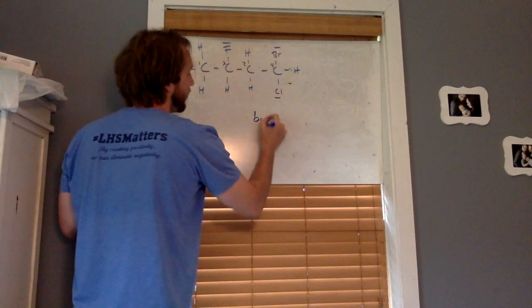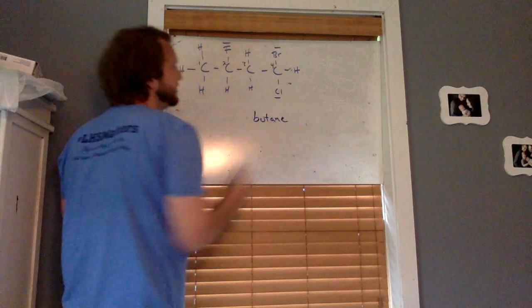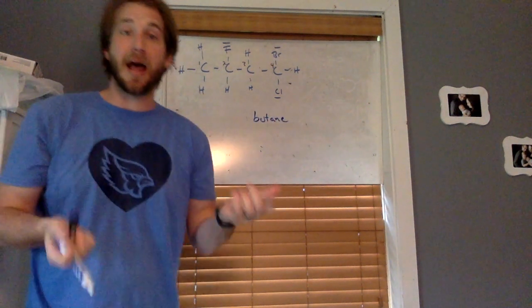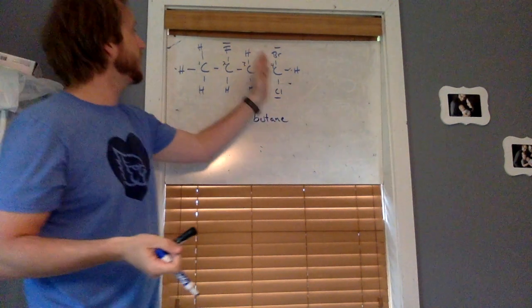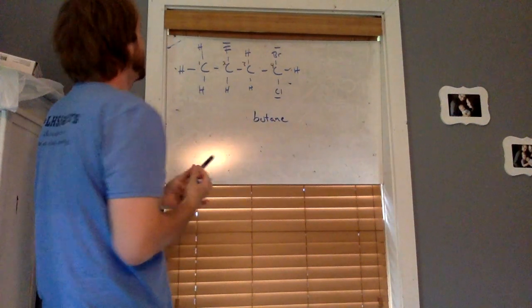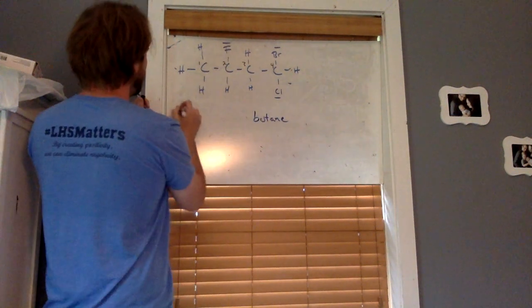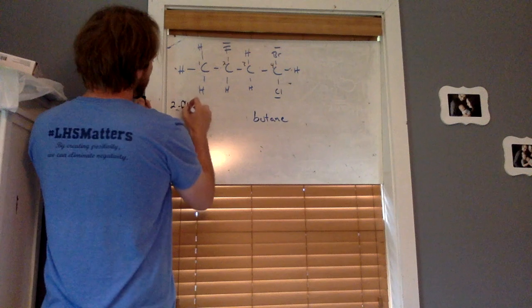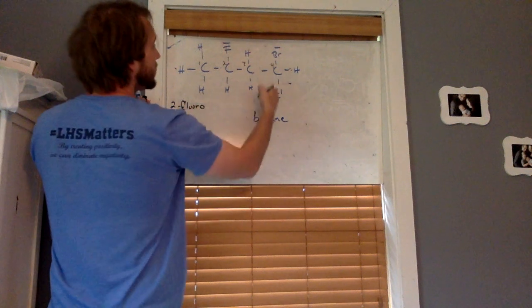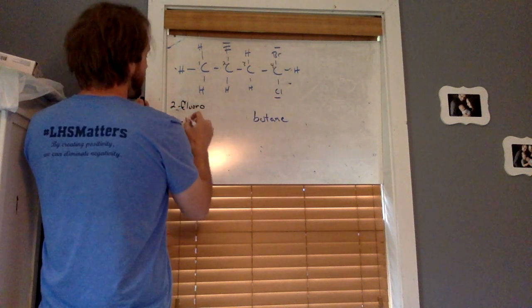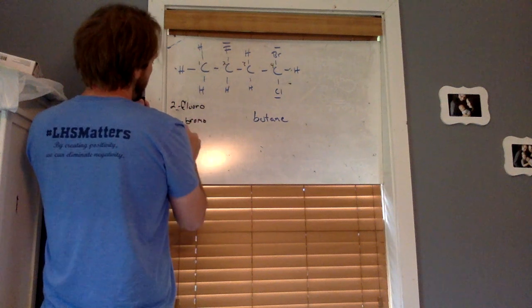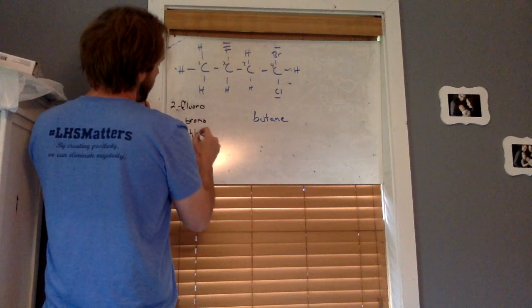And I've got an option, we could number one two three four going left to right. If we did that looks like we would have a two fluoro, it looks like we'd have a four bromo, and a four chloro.